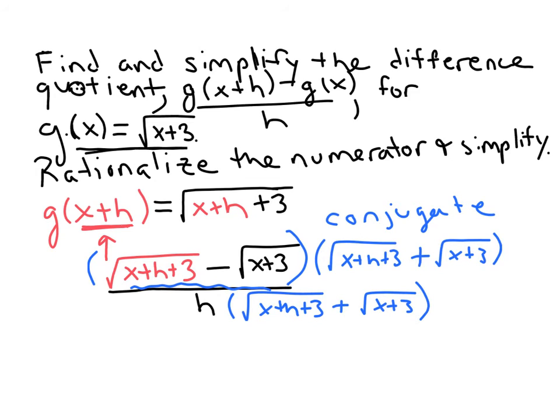If you multiply out the numerator, the first thing you're going to get is this square root times itself. So that's going to give you just x plus h plus three. The outside, you're going to have this square root times this square root. With the inside, and this happens every time you multiply by a conjugate, you're going to get the same product, but now with a negative sign. So when you foil, the outside plus the inside is going to be zero every time you multiply by conjugates. And then for last, you'd have this negative root times the positive root. So you're going to end up with negative x plus three without the square root, because you're multiplying that square root times itself. The square root goes away.